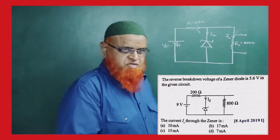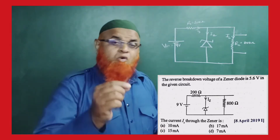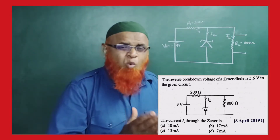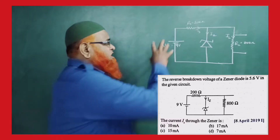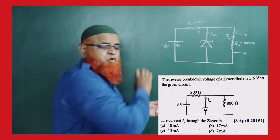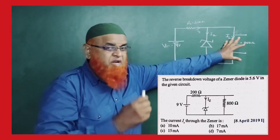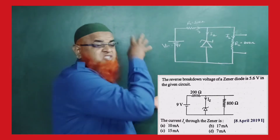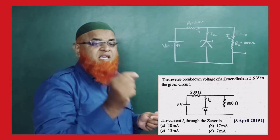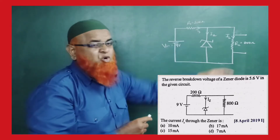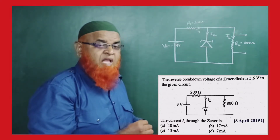Today we are discussing Zener diode as a voltage regulator or voltage stabilizer. The simple meaning is: whatever may be the variations of the input, the output voltage should remain constant. Whatever may be the variations in the input voltage, if the output voltage is constant, then we say that this circuit is acting like a voltage stabilizer or voltage regulator.